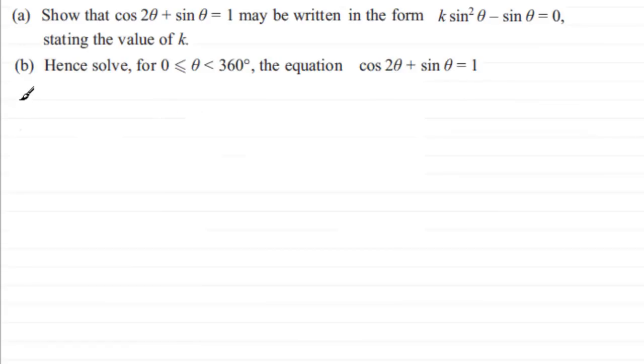Okay, well for part A, let's just mark it in there. We've got cosine of 2θ + sin θ = 1, and what we've got to do is turn it into an equation involving just sin θ. We've got to therefore modify this term here.